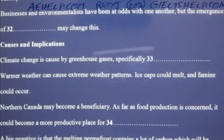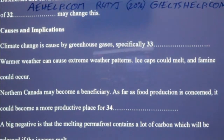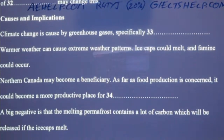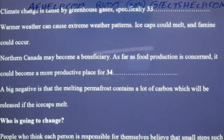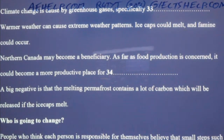Weather patterns could become more extreme. The polar ice caps could melt. Sea levels could rise. And instances of famine due to drought could also increase. On the other hand, places such as northern Canada will likely become more productive for farming and mineral and crude oil extraction.